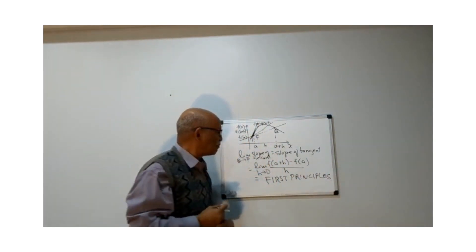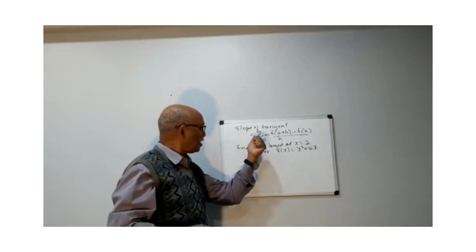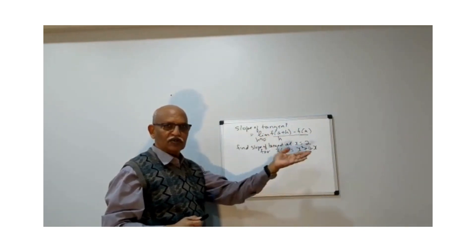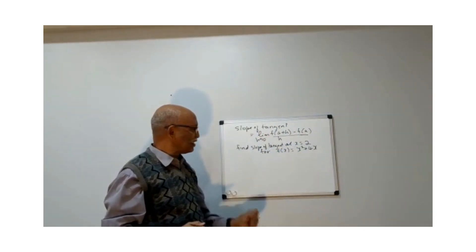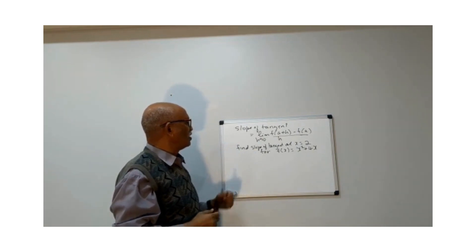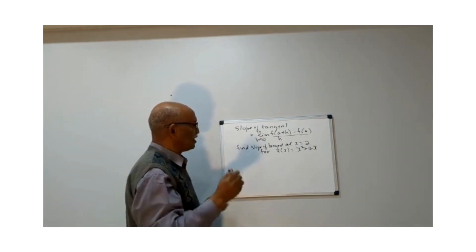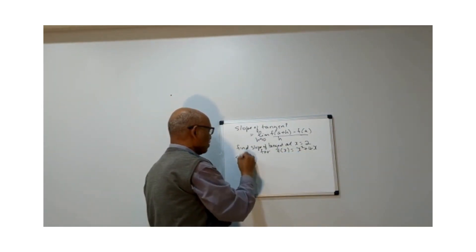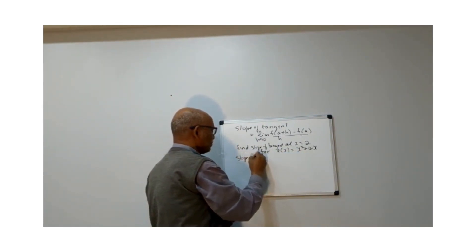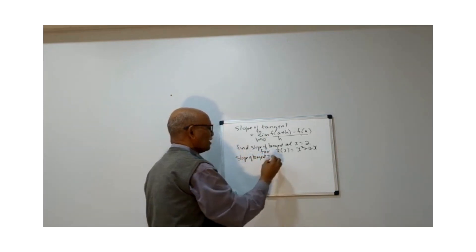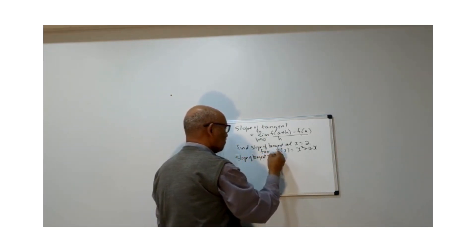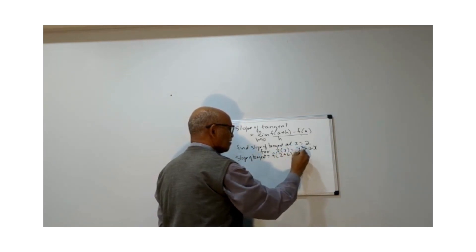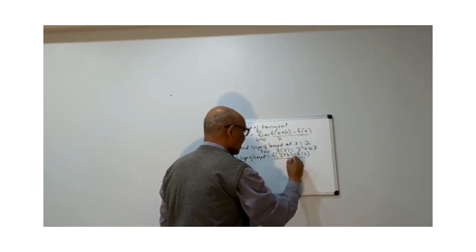We'll see some examples of how we use this formula. Finding the slope of the secant would just require two points — we know that from grade 9 and 10. This is new for calculus. So, the slope of the tangent at x equal to 2 for this curve uses exactly the same formula. Slope of tangent equals limit as H approaches 0 of f(2+H) minus f(2) over H.